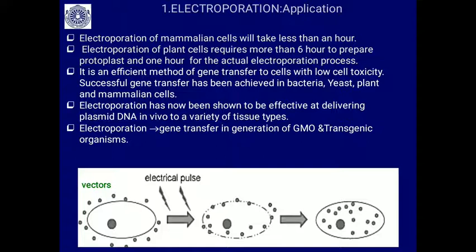Electroporation of mammalian cells will take less than an hour, whereas electroporation in plant cells requires more than 6 hours to prepare the protoplast and 1 hour for the actual electroporation process. Animal cells do not have a cell wall, whereas for plant cells we have to remove the cell wall to expose the cells to the electroporation process. That is why protoplast preparation takes longer than the actual process of electroporation.